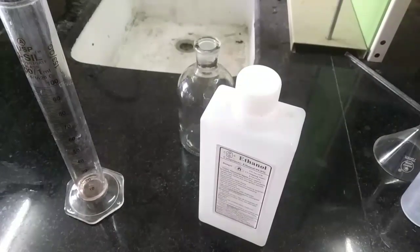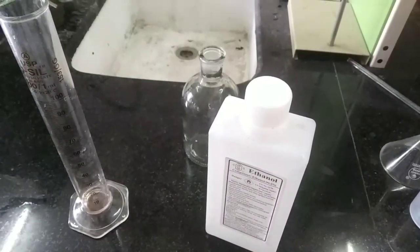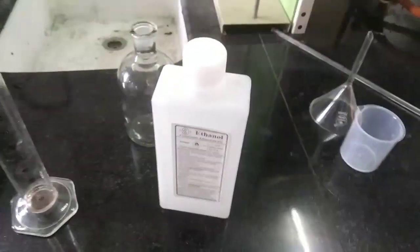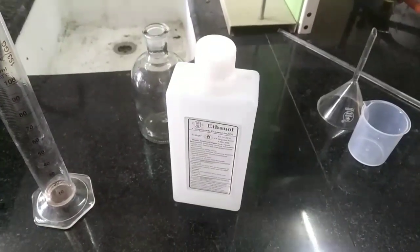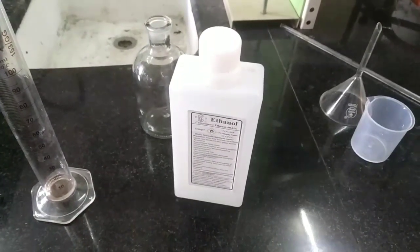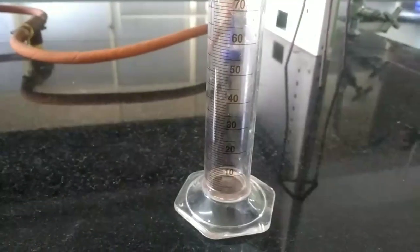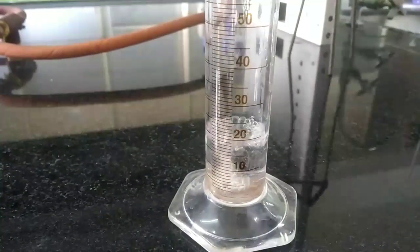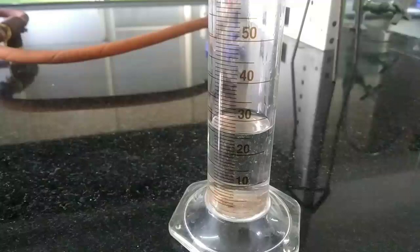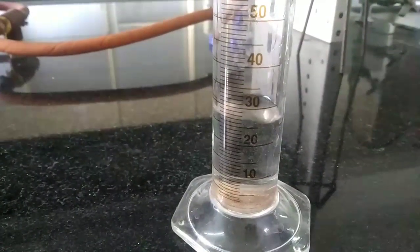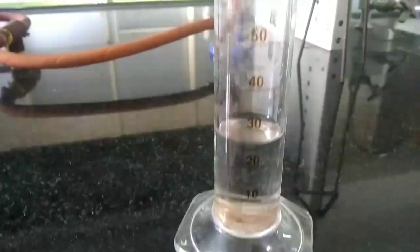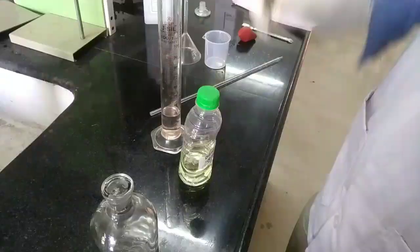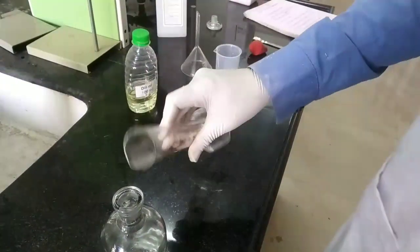The given formula is for 100ml, but we are making only 50ml, so all quantities will be half. We need 60ml of ethanol for 100ml, but will use 30ml. Now we are measuring 30ml of alcohol and transferring it into the reagent bottle.